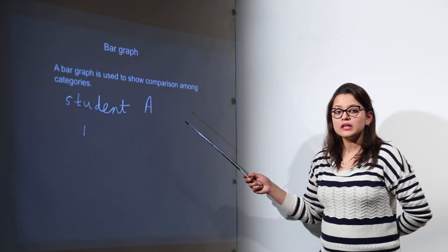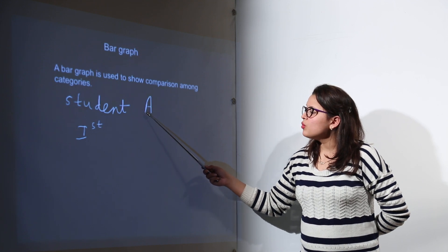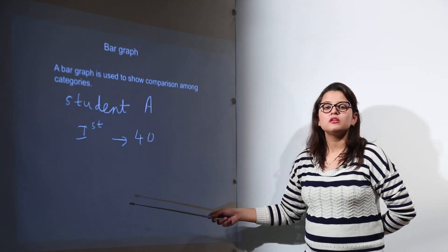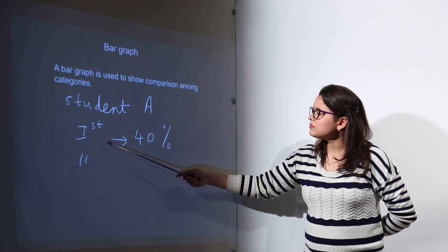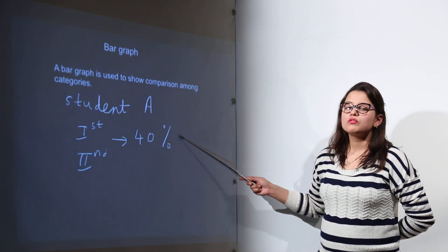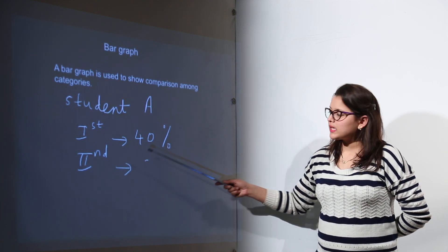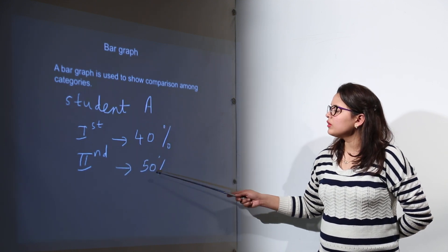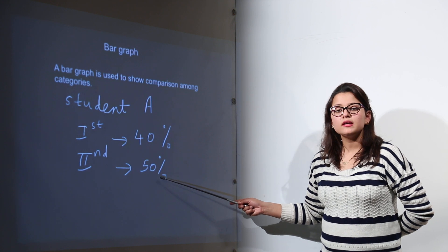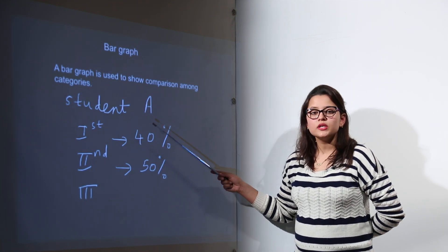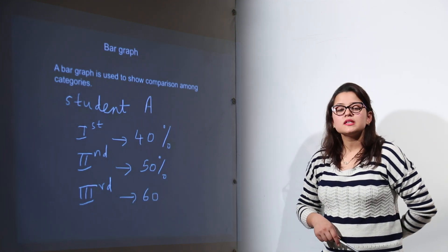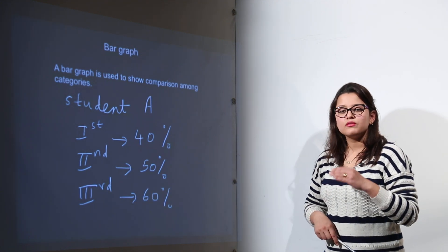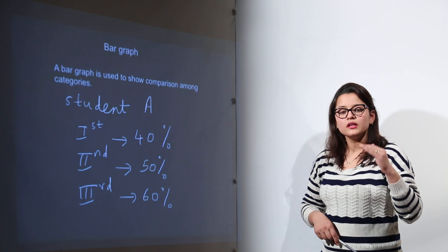For that I have taken up student A whose first term marks, second term marks and third term marks will be given to me. For example, the first term marks for student A were 40%. For the second term the student A secured 50% marks and in his third term the student A secured 60% marks. Now these are the values given for student A's marks in different terms.